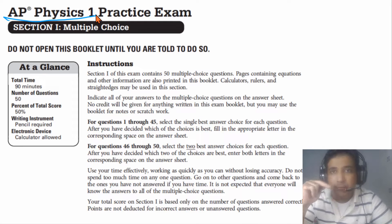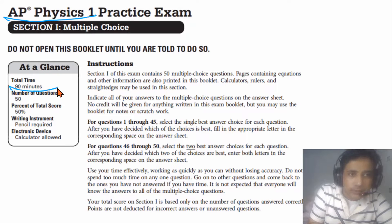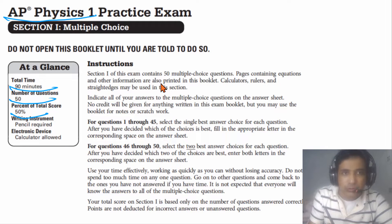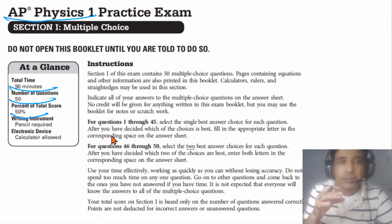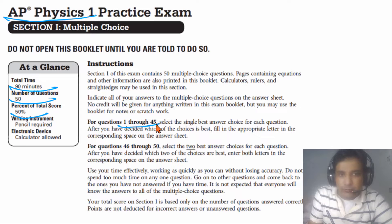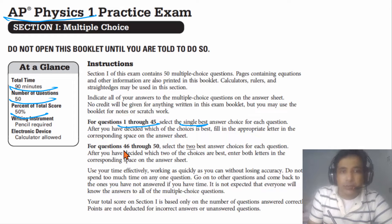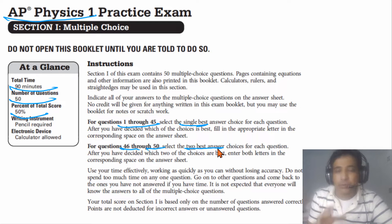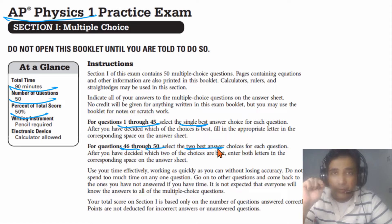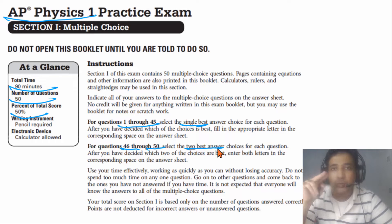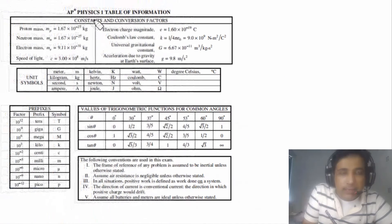The AP Physics 1 exam consists of two sections. Section 1 has only multiple choice questions and Section 2 has only FRQs. Section 1 is 90 minutes, contains 50 questions, and is worth 50% of the total score. It is divided into two parts: questions 1 to 45 require one single best answer, and questions 46 to 50 require you to select two best possible answers.